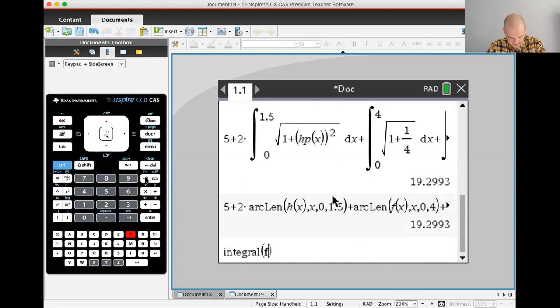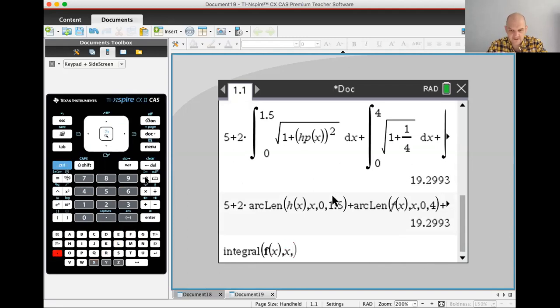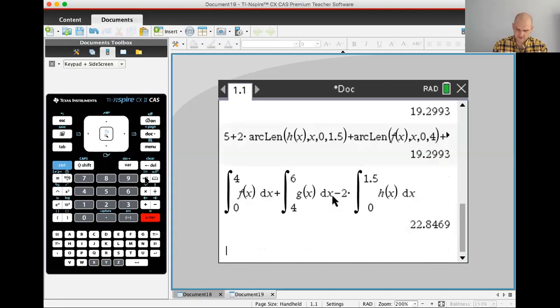And then the area integral of F of X from zero to four plus integral G of X from four to six minus two times the integral H of X from zero to 1.5. This should do 22. Okay. So I'm going to jot those down and I'm going to say we pretty successfully did this problem.